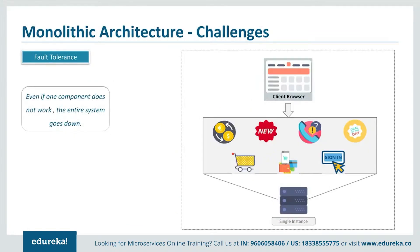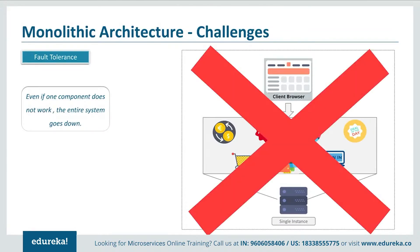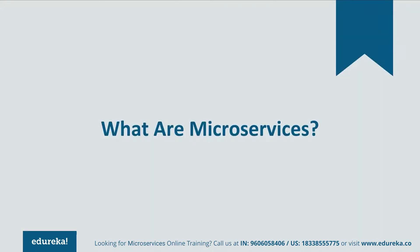The third challenge is fault tolerance. Consider your shopping cart application — if even one feature of the application doesn't work, then the entire system goes down. This creates problems for users and also for developers, as they have to rebuild it again. To avoid these challenges, developers decided to shift from monolithic architecture to microservices.